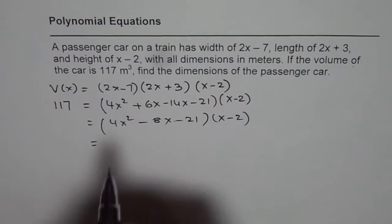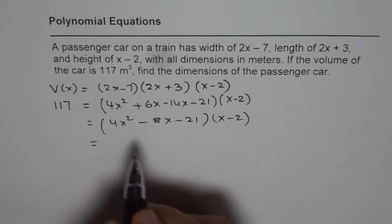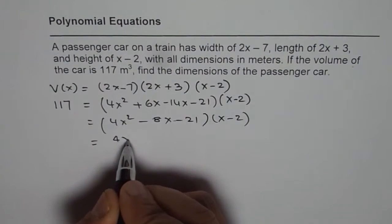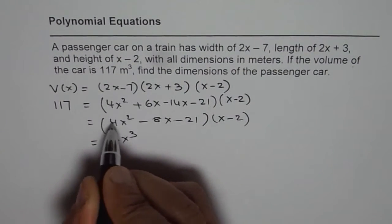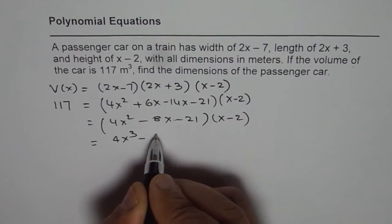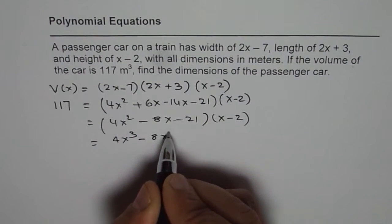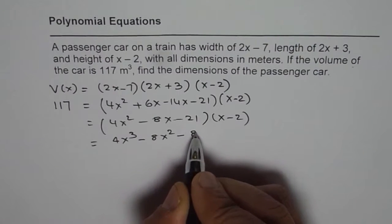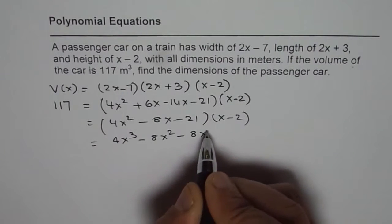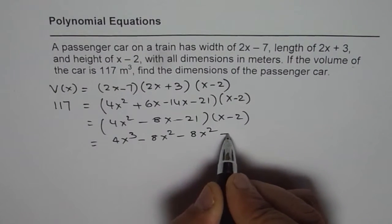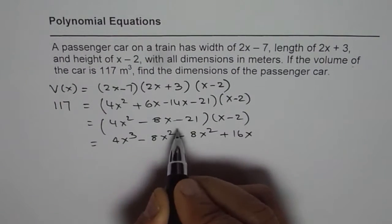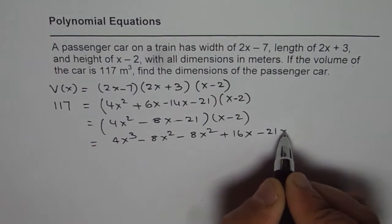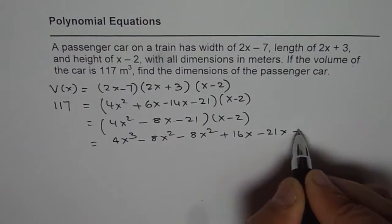Now let us expand. 4x squared times x gives 4x cubed, and 4x squared times minus 2 gives minus 8x squared. Then minus 8x times x gives minus 8x squared, and minus 8x times minus 2 gives plus 16x. Finally, minus 21 times x gives minus 21x, and minus 21 times minus 2 gives plus 42.